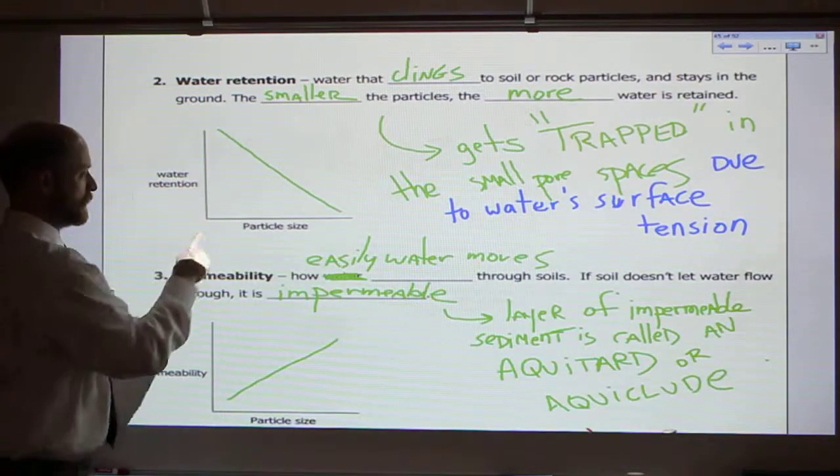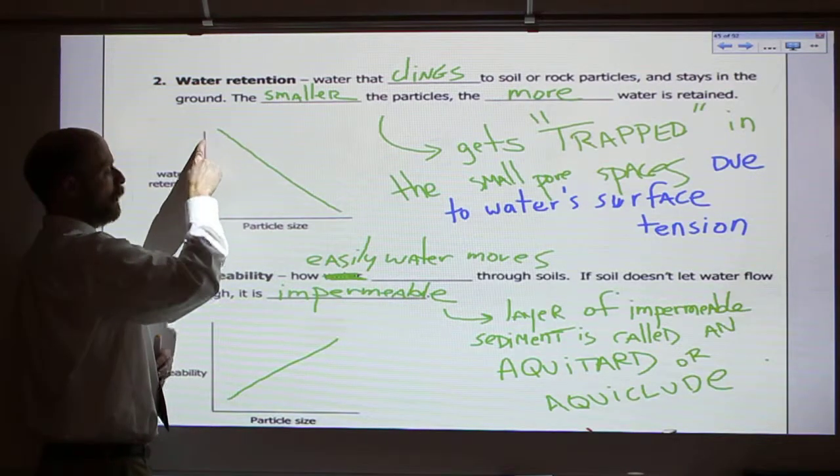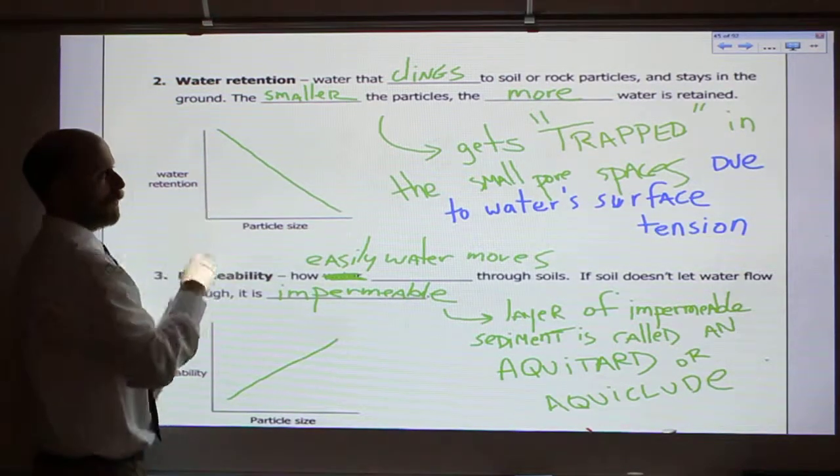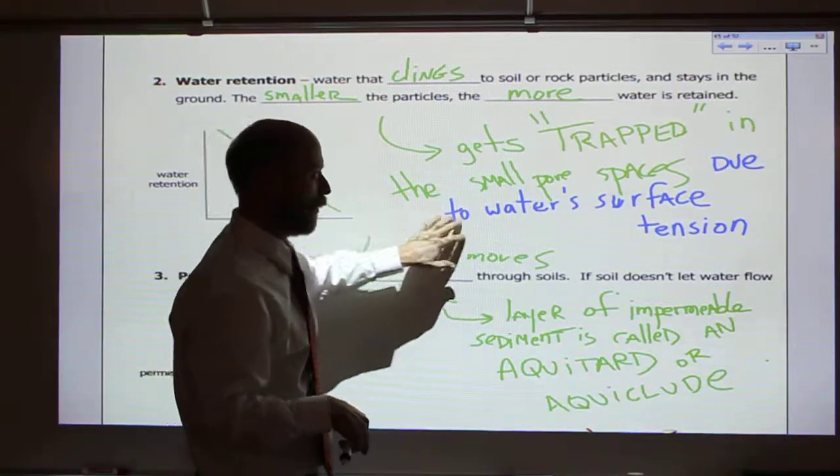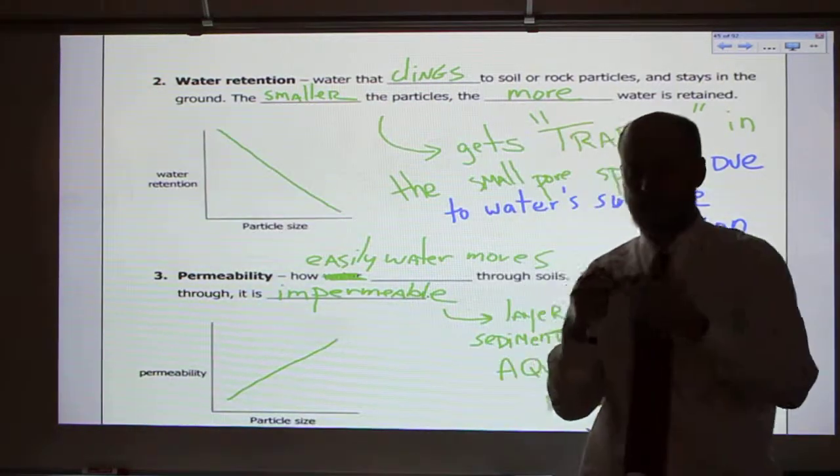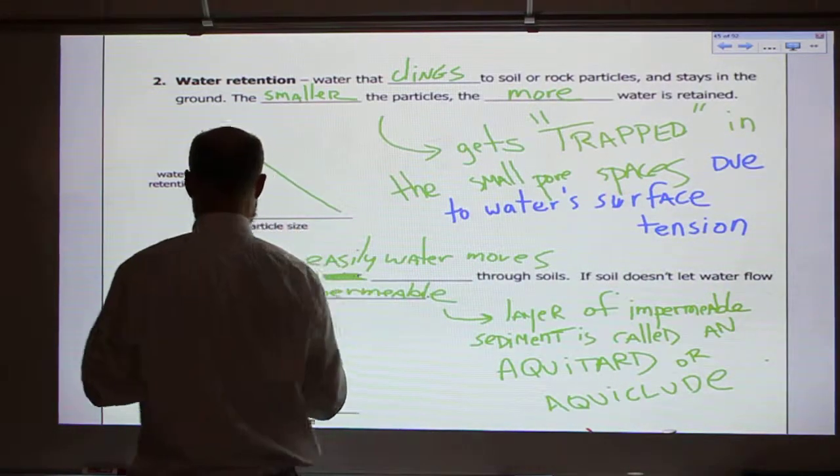And so the particle size, the small particle size, you have high water retention. Large particle size, you have lower water retention. Water gets trapped in the small pore spaces due to water's surface tension and also clings to the more surface area in smaller particles.